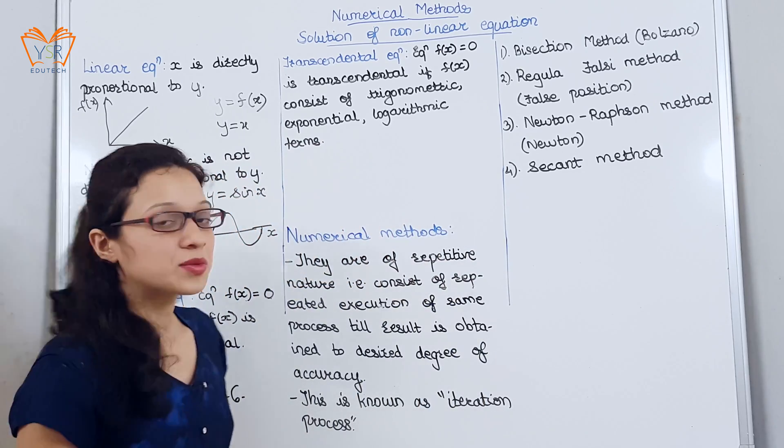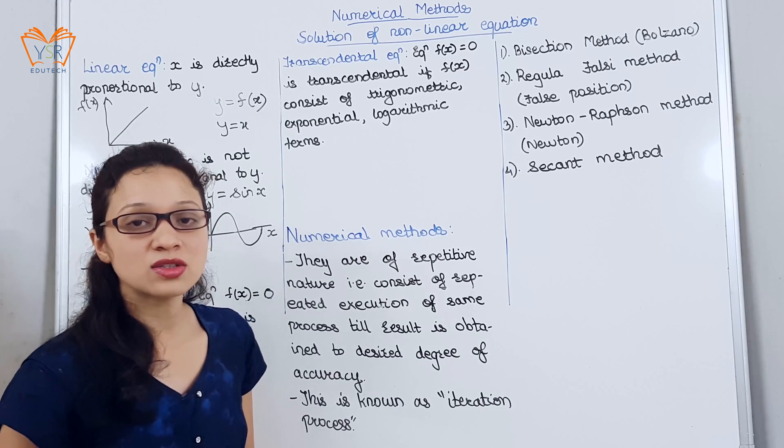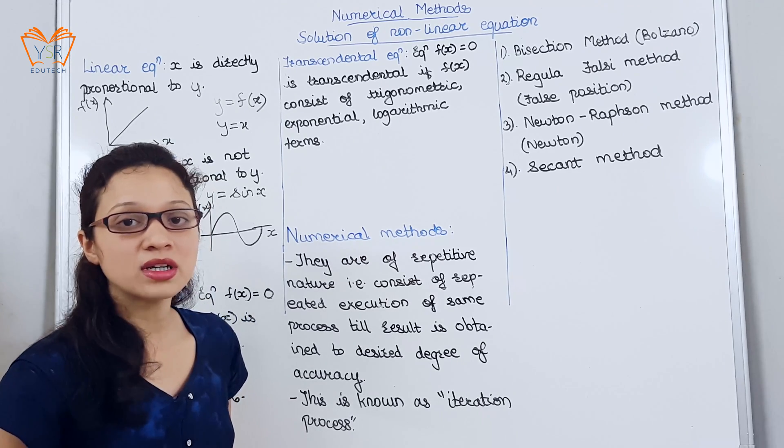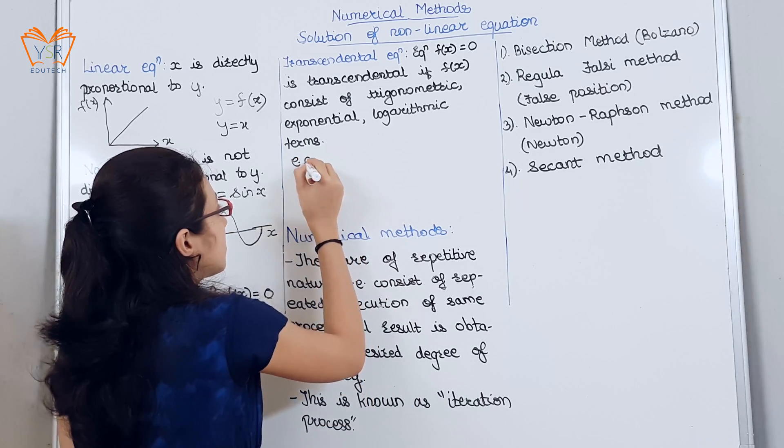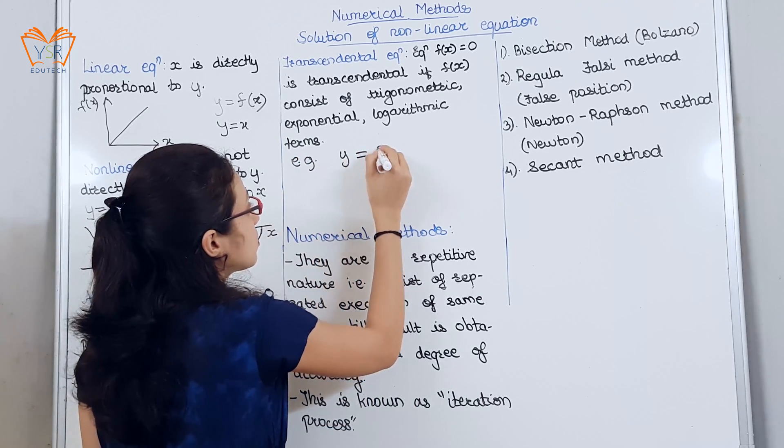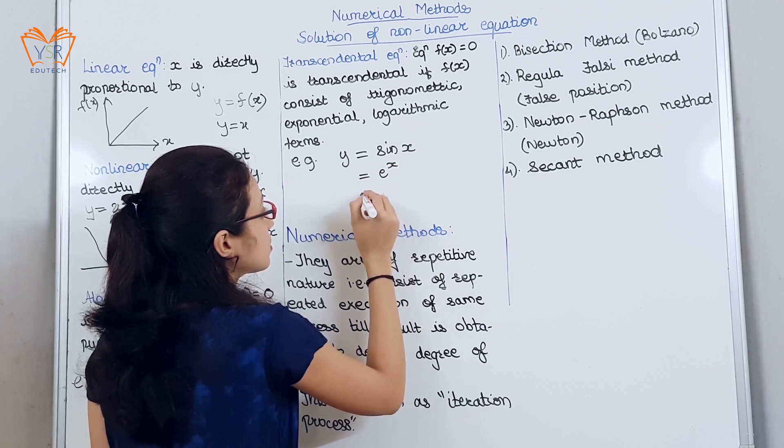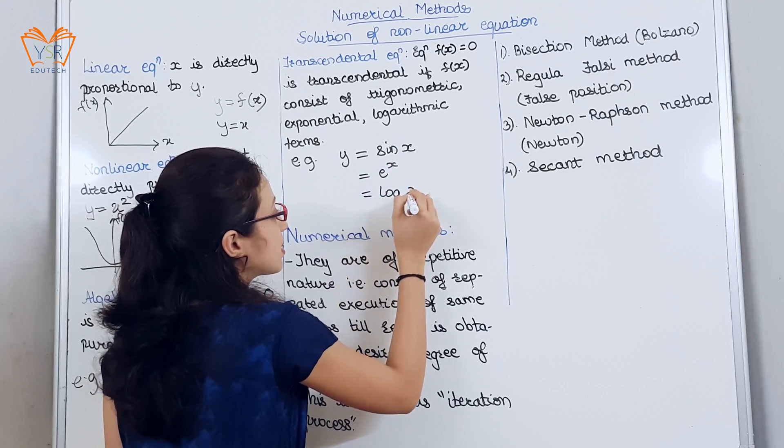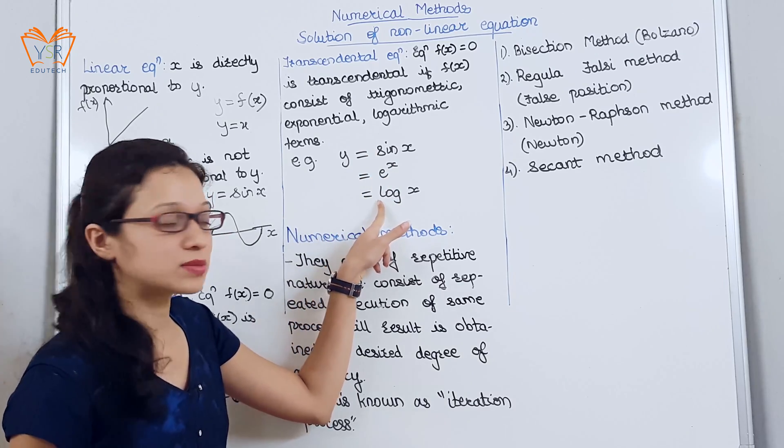Second, transcendental equation. Equation f(x) is called transcendental if it consists of trigonometric, logarithmic, or exponential terms. Example: y = sin x or e^x or log x. That is, it consists of trigonometric, exponential, or logarithmic terms.